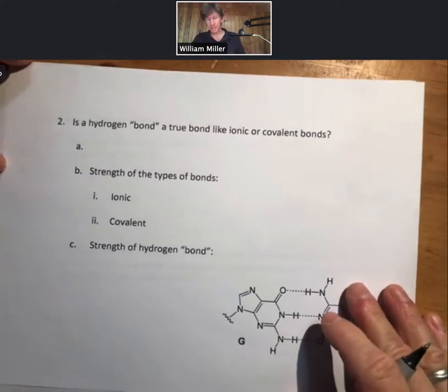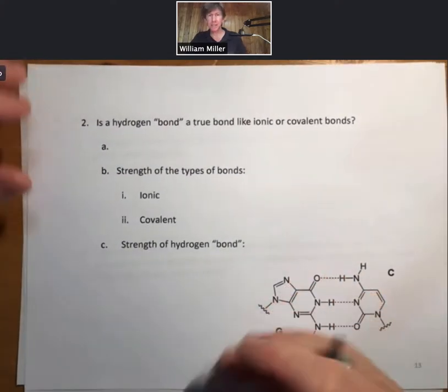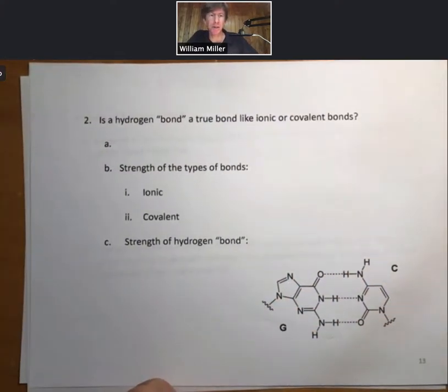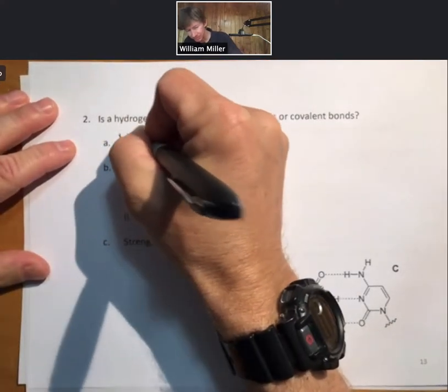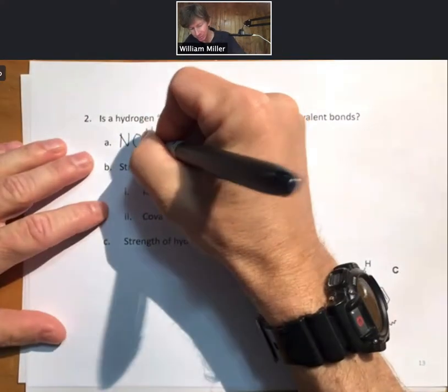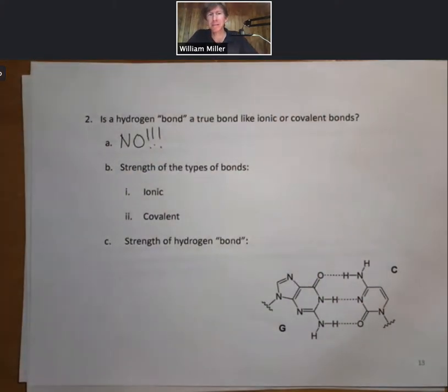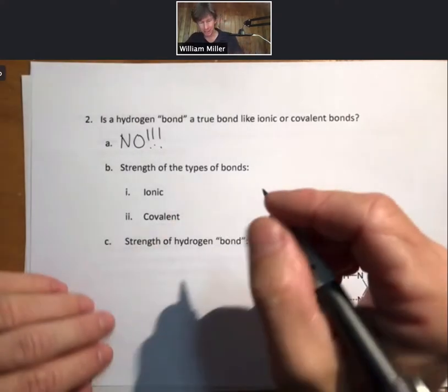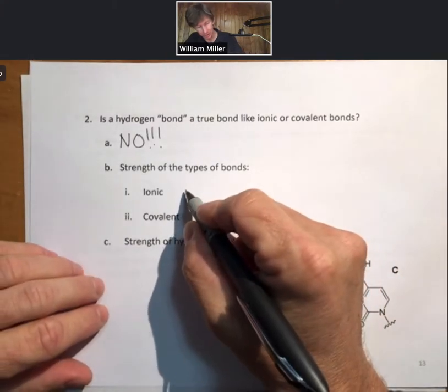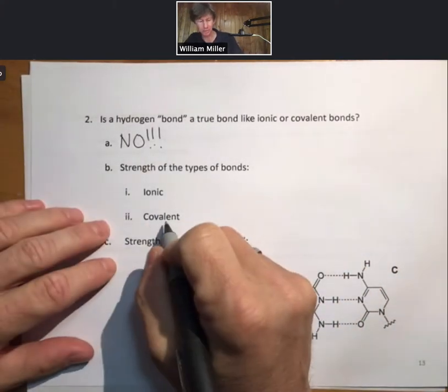Now, is a hydrogen bond a true bond like ionic or covalent bonds? The first thing I'll write is NO! with maybe two, maybe three exclamation points. So it is not a type of bond and chemists do not consider it a bond in general. We will talk about why it's called hydrogen bonding in a minute.